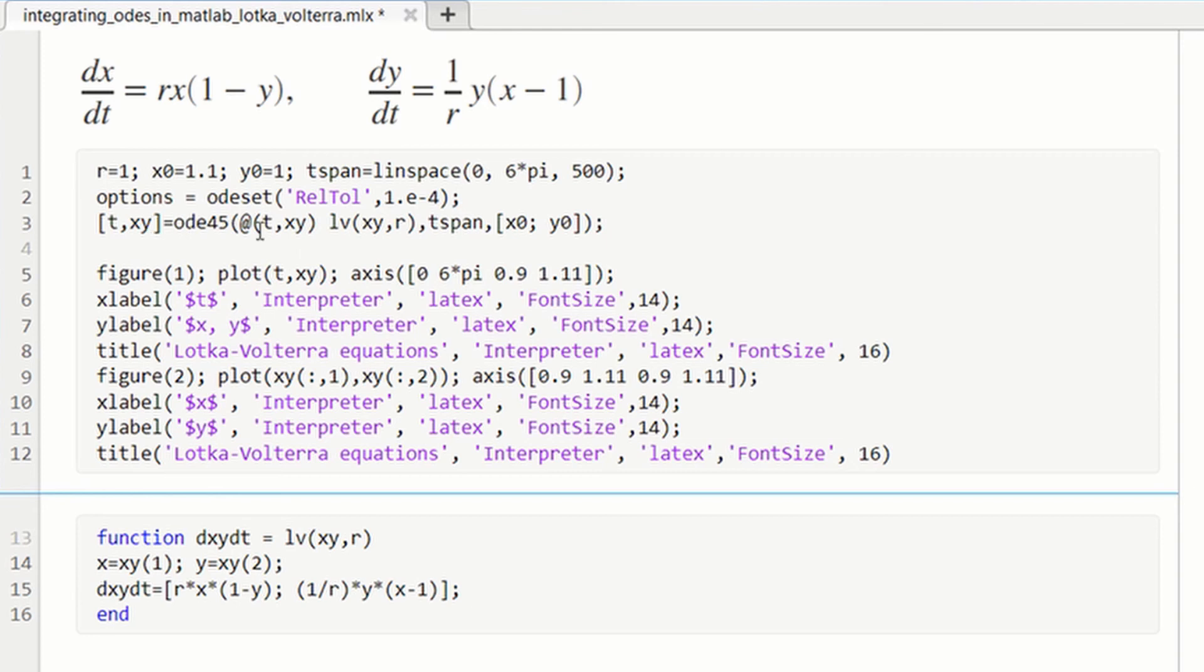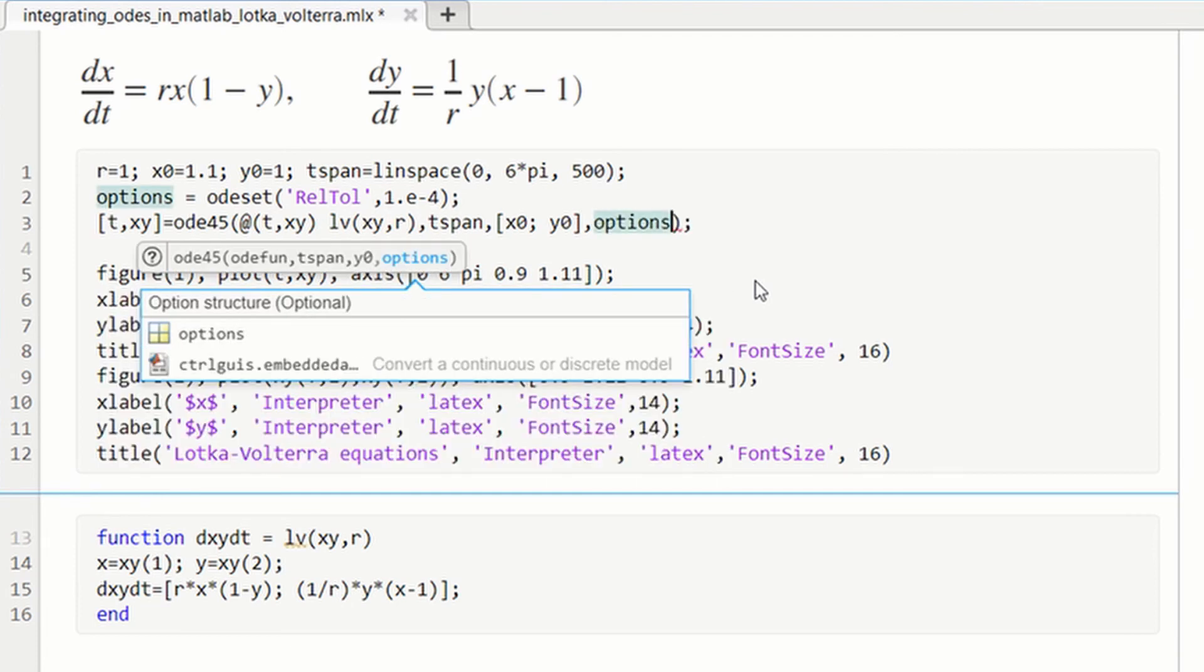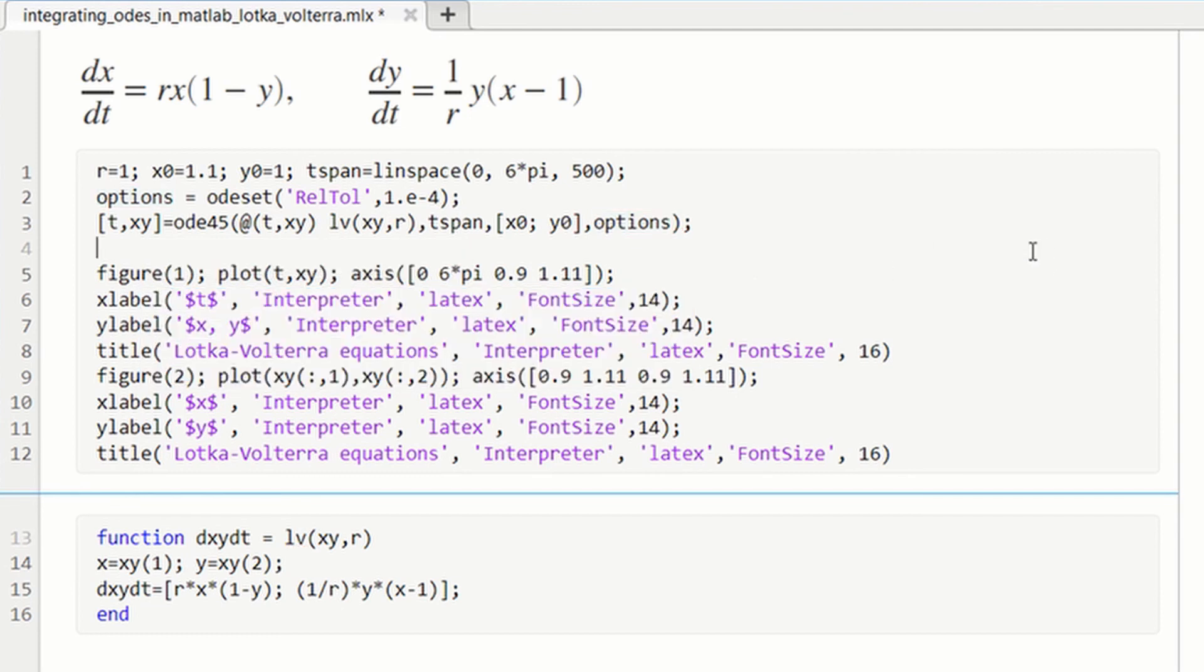And then in the call for ODE45, we need to add an additional argument here, which is the options, which was set by odeset here.